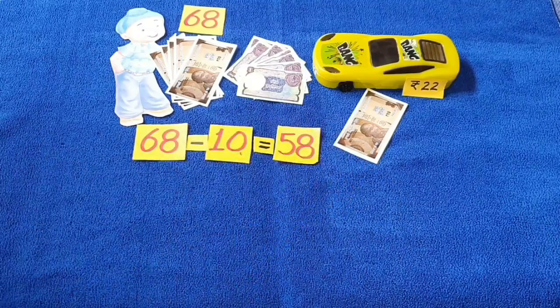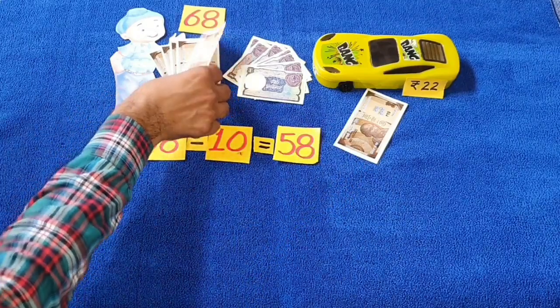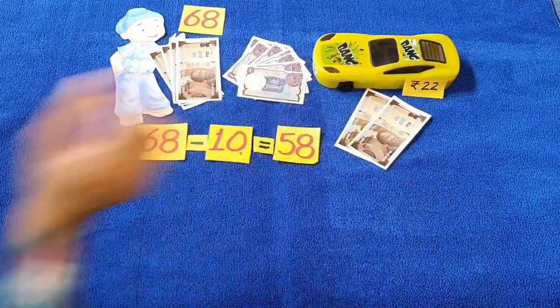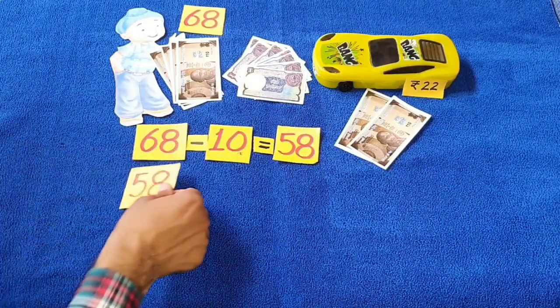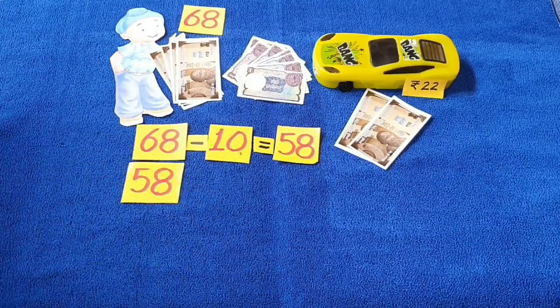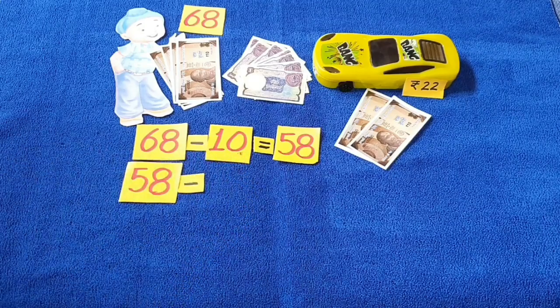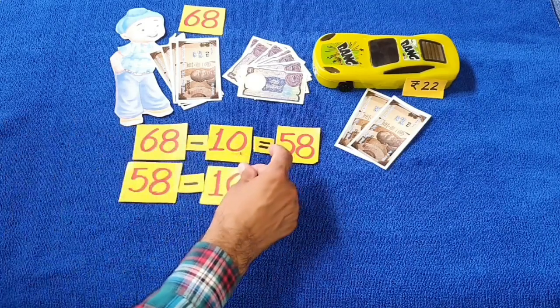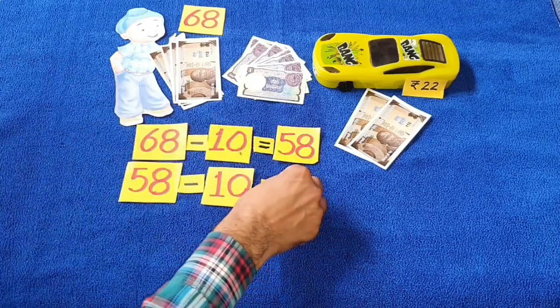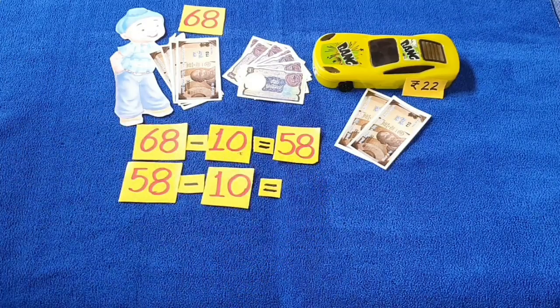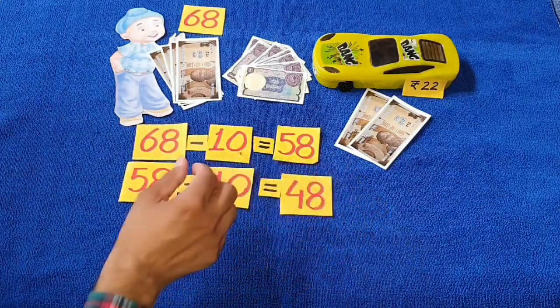Sukhman is left with 58 rupees. He gave another 10 rupee note to the shopkeeper. He had 58 rupees. He gave 10 rupees to the shopkeeper. How much money is left with Sukhman now? Yes, 58 minus 10 is 48 rupees.